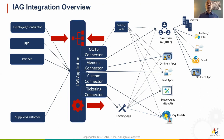There are out-of-the-box connectors shipped with the product for widely used systems such as Active Directory, LDAP, Salesforce, etc. There are generic connectors that can provision into applications that publish user management APIs using standard protocols like REST. If these options don't work, the IAG application has a framework customers can use to develop custom connectors, as long as the application system you want to manage has APIs available.